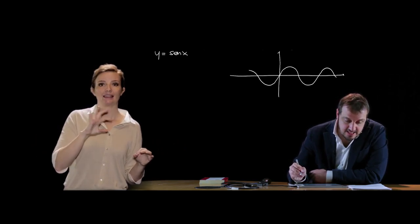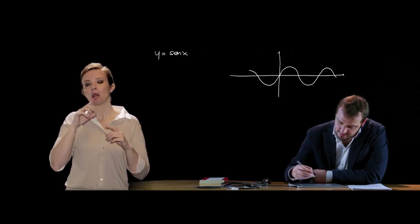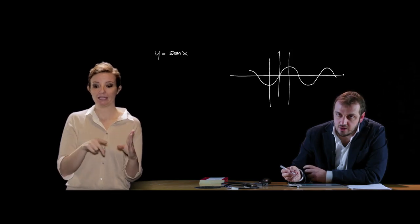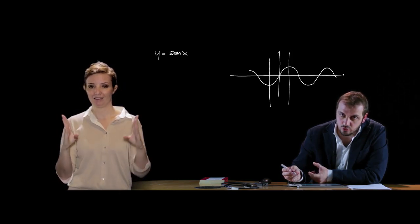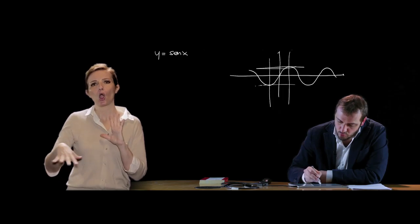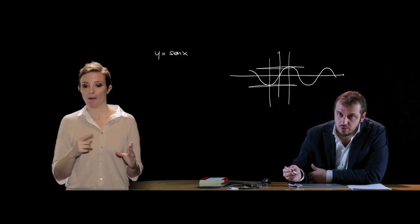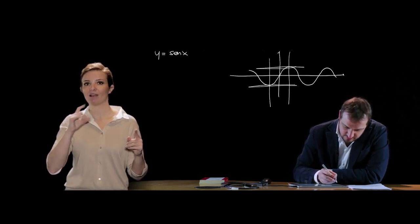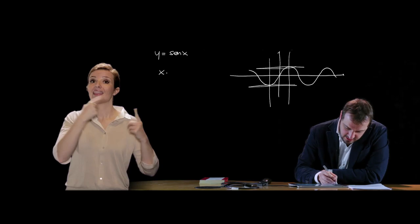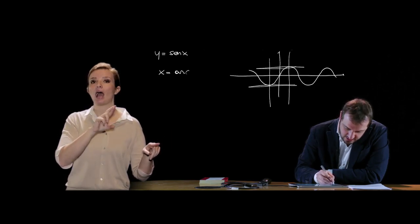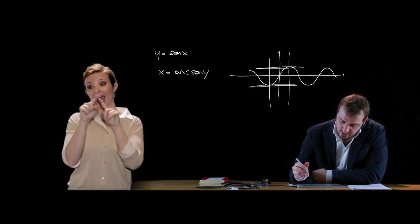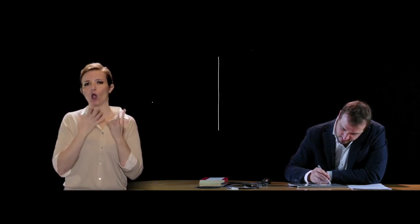Però possiamo limitare questa funzione all'intervallo [−π/2, π/2] e il codominio all'intervallo [−1, 1]: in questo caso la funzione è biiettiva e quindi invertibile. La funzione inversa è definita arco seno: x = arcsen(y), ovvero l'arco il cui seno misura y.